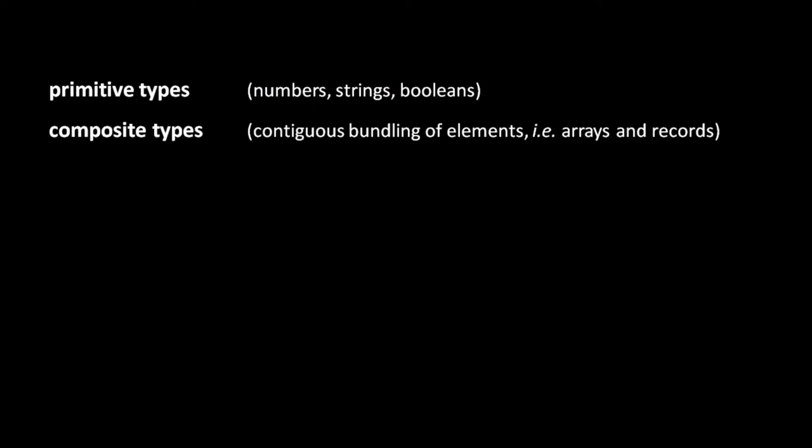When we talk about data types, we can make a distinction between primitive types and composite types. Primitive types are atomistic pieces of data like individual numbers, strings, or booleans. A composite type, in contrast, is a bundling of these elements together in a contiguous fashion, meaning they're all placed next to each other in memory. Composite types come in the form of either an array — a sequence of homogenous elements one after the other — or a record, more commonly called an object, which is a bundling of heterogeneous items.